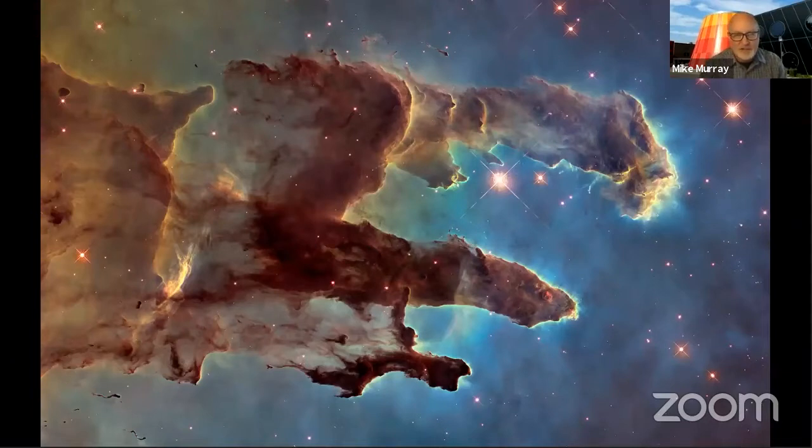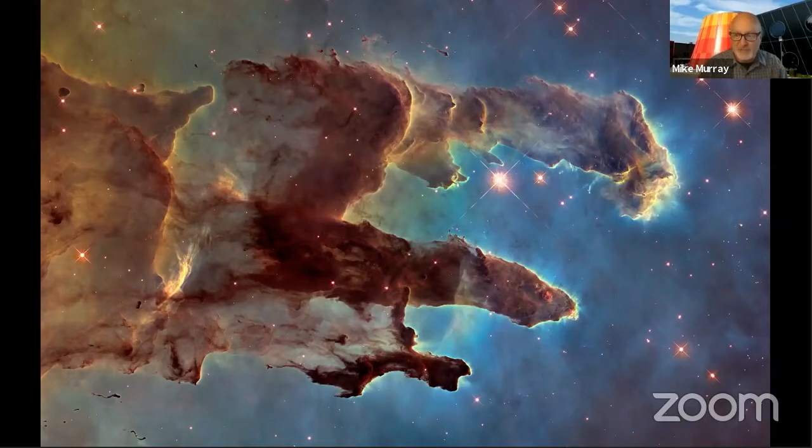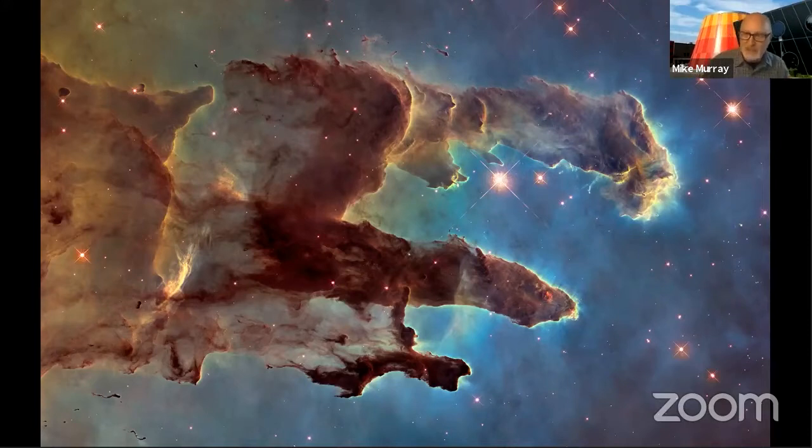Now you might recognize this picture. This star forming region became one of the most iconic pictures ever taken by Hubble. The so-called pillars of creation. These light and dark clouds of gas mark sites of stellar formation, stars still coming out of their birth clouds.